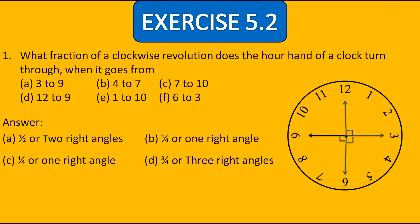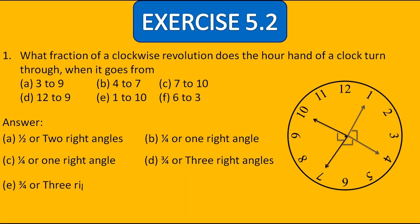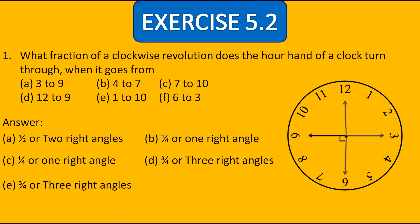In point E, the hour hand was first on 1 and now it reached on 10. We divide the clock into 4 parts — it is making 3 right angles, meaning three fourths of the revolution. Now for F, it was on 6 and reached at 3. Same way, dividing into 4 parts, it is making 3 right angles, or three fourths of the revolution.